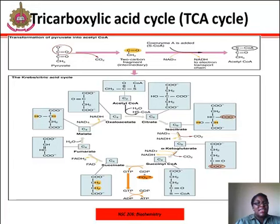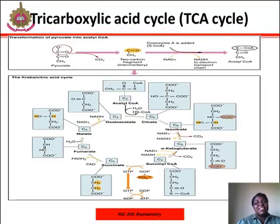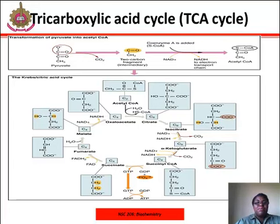The tricarboxylic acid cycle, or TCA cycle, is a phase of carbohydrate metabolism that follows an aerobic pathway from the stage of pyruvate. The TCA cycle is also called the citric acid cycle, which is the most common term used. The citric acid cycle is named from citric acid, which is formed in the first step of the cycle, and is also named the Krebs cycle. The pyruvate molecules generated during glycolysis are transported across the mitochondrial membrane into the inner mitochondrial matrix, where they are metabolized by enzymes in the Krebs cycle. During the Krebs cycle, high-energy molecules including ATP, NADH, and FADH2 are created.